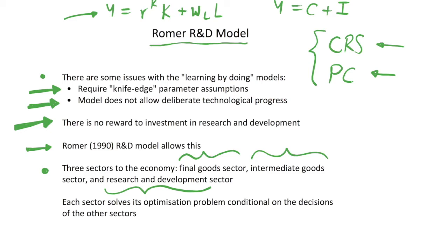We obviously have an R&D sector, so we clearly have some deliberate R&D. We don't necessarily need these knife-edge parameter assumptions, as I'll get into as we address and look at this model in the future. We do have a reward to investment in this model because of the monopoly power generated from the fact that this R&D sector can get patents from the government for the ideas they create.